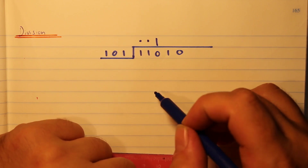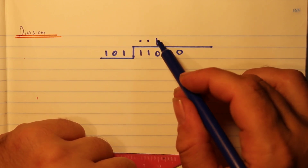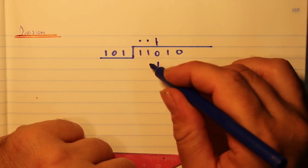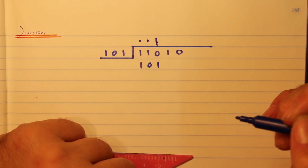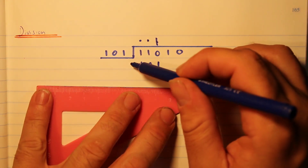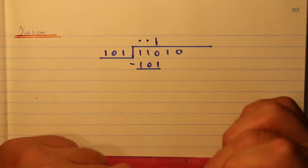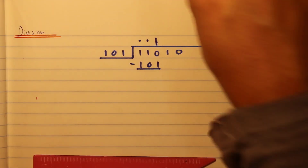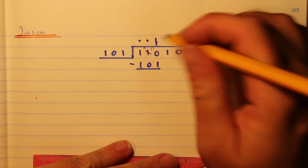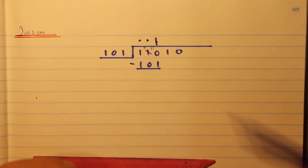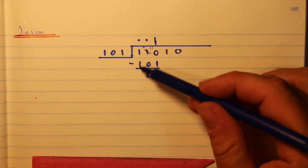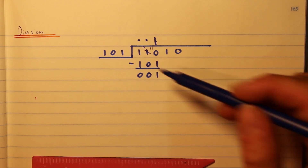When it goes in, we write a one times this number and write the number down. Then we subtract. Zero minus one we can't do, so we borrow: two minus one is one, zero minus zero is zero, and one minus one is zero.